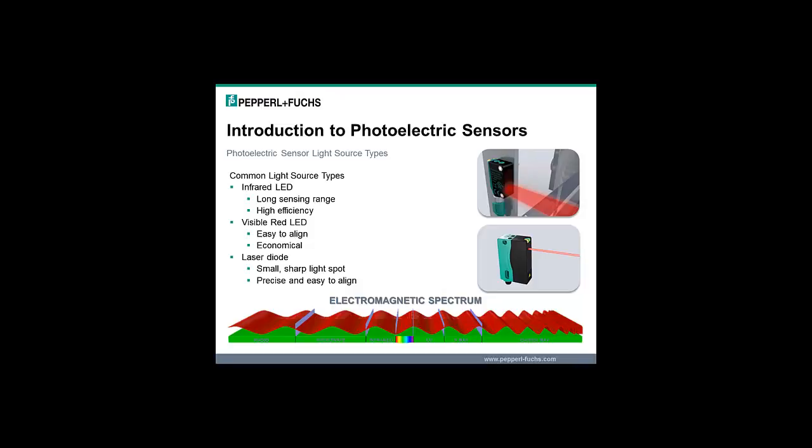Laser light sources are a subcategory of visible red and are used in the detection of very small parts at long distances. Lasers have a very tight light beam that is strong and concentrated, providing a higher degree of efficiency and precision than standard visible red LEDs. Ease of alignment is also dramatically improved compared to visible red LEDs.